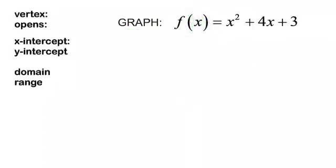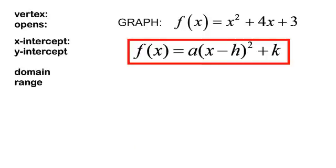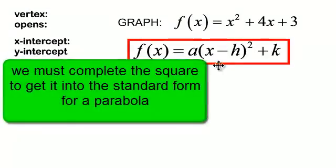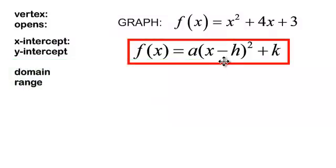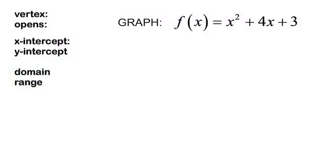Our last parabola that we are going to graph: f of x is equal to x squared plus 4x plus 3. This is not in the form we have been working with. If I want it in that form, I need to complete the square first. Why? Because I want to have this binomial squared — and you get that from having a perfect trinomial. So we have to make that perfect trinomial by completing the square.